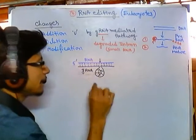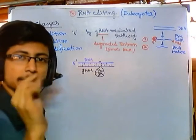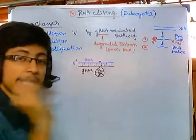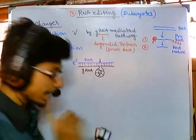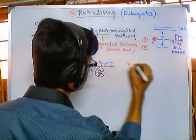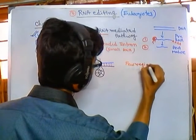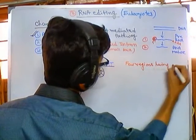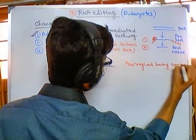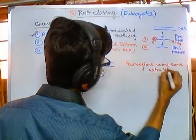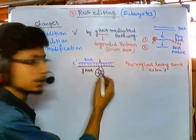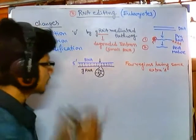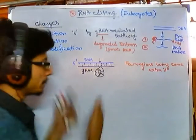This gRNA has maximum resemblance in its nucleotide structure or complementary nucleotide structure with the RNA, except for a few regions having some extra adenosines. But the rest of the part has remarkable complementarity, so it pairs with the RNA and binds via hydrogen bonding.